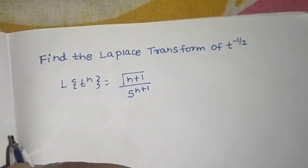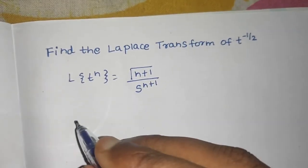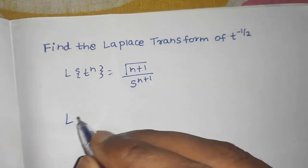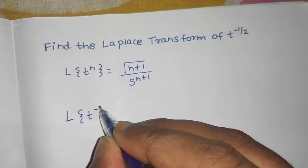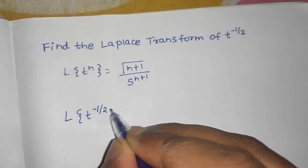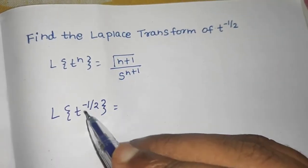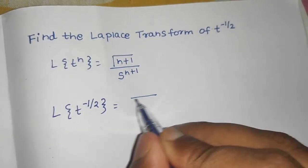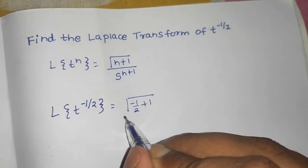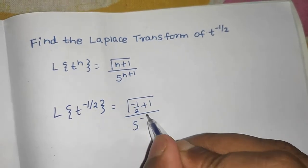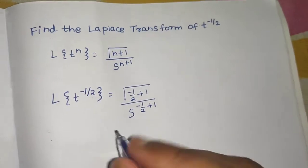So we will use this formula. Laplace of t raised to power minus half equals, now here n is minus half, so gamma of minus half plus 1, s raised to power minus half plus 1. We directly use the formula here.